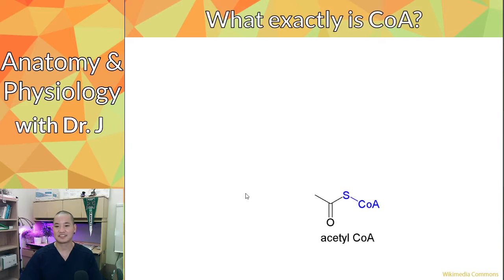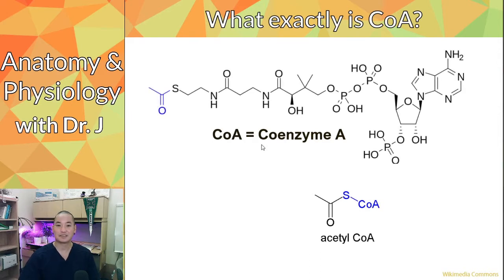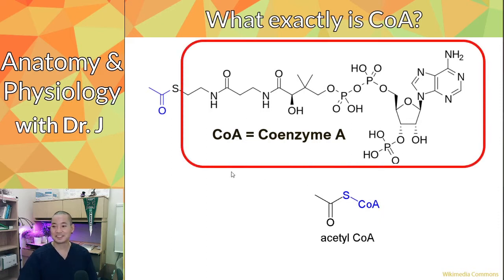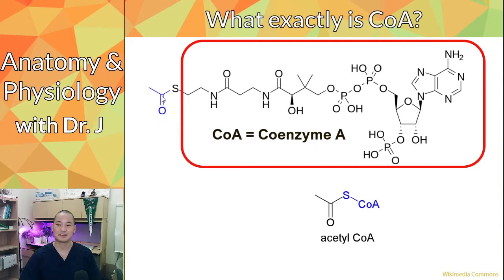A common question is: what is CoA? CoA is coenzyme A. If we drew out the entire structure of coenzyme A, it's this entire structure shown here. You don't need to know this exact structure for this class — maybe advanced biochemistry might require it — but notice that the acetyl group is very small compared to the entire acetyl-CoA molecule.